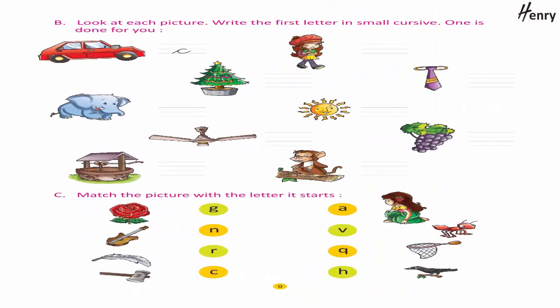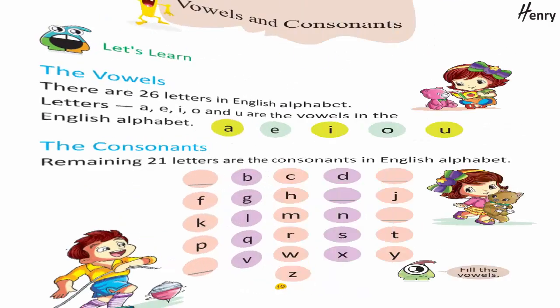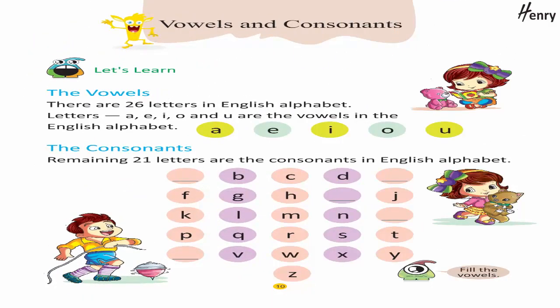Look at each picture, write the first letter in small cursive. One is done for you. Match the picture with the letter it starts. Vowels and consonants — let's learn the vowels. There are 26 letters in the English alphabet.